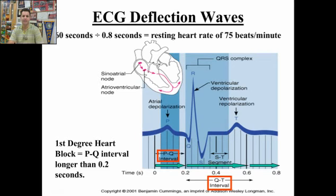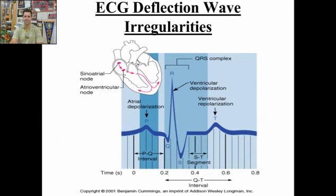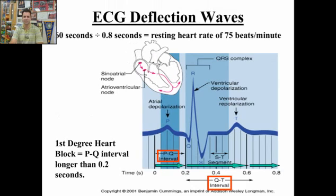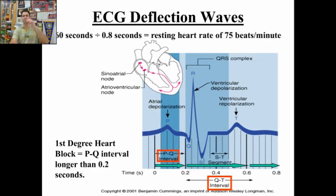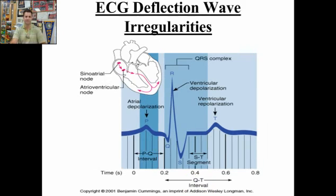If you have a first degree heart block, the PQ interval is longer than 0.2 seconds — the PQ interval will be elongated. That would be a first degree heart block, meaning the conduction system is blocked between the SA node and the AV node. There's some blockage occurring; it's not transmitting properly.